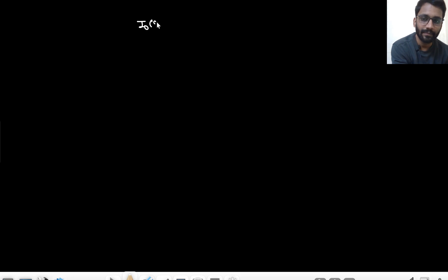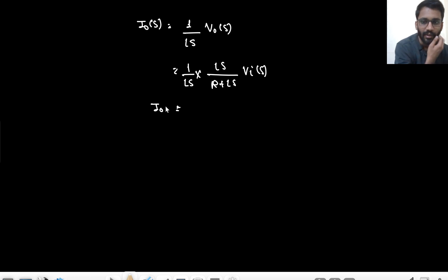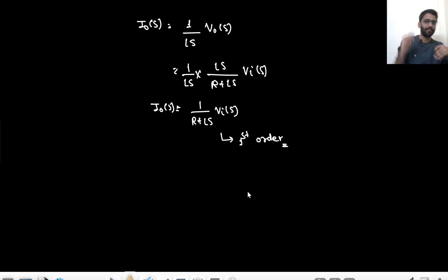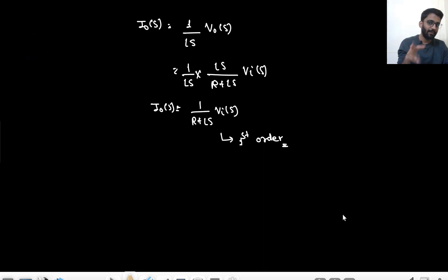I_out(s) = (1/(L·s)) × V_out(s) = (1/(L·s)) × (L·s / (R + L·s)) × V_in(s) = 1/(R + L·s) × V_in(s). So I_out(s) = 1/(R + L·s) × V_in(s), which is a first-order circuit. Both voltage and current outputs give the same first-order result due to pole-zero cancellation.